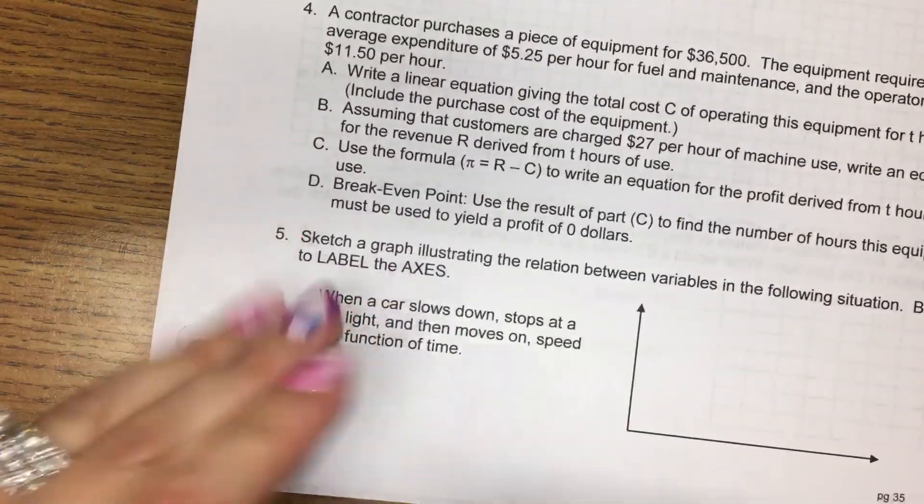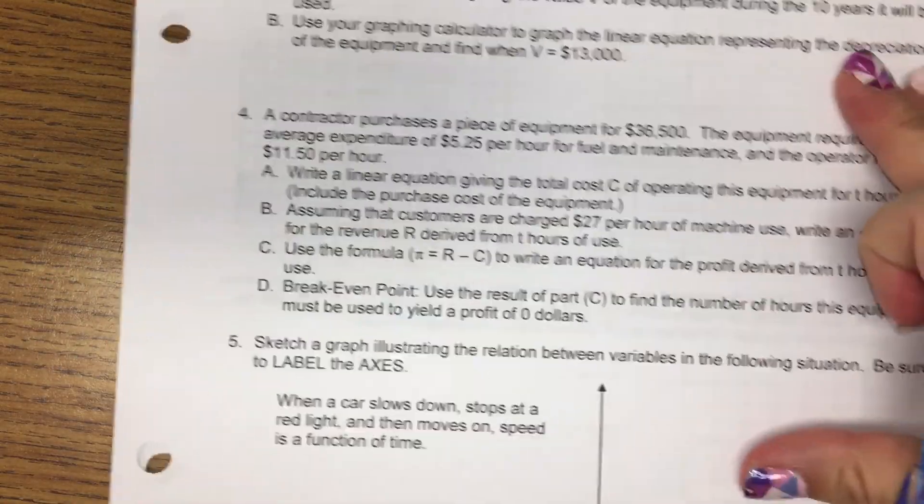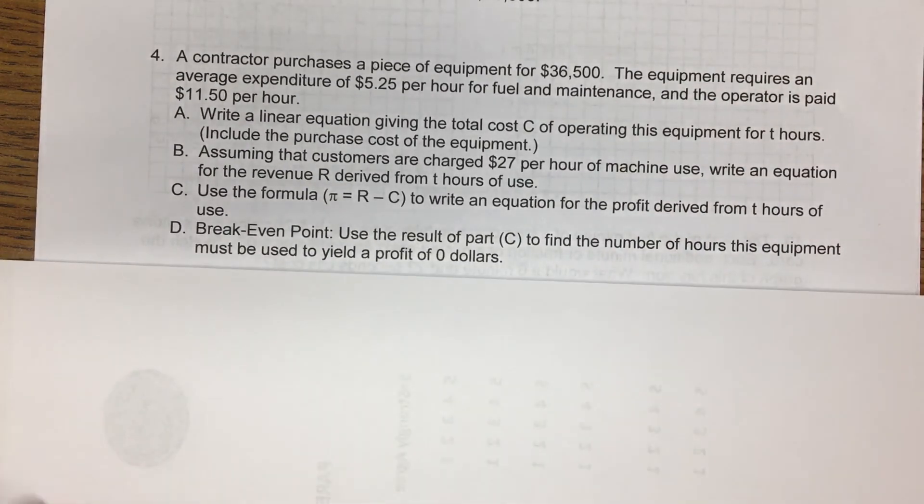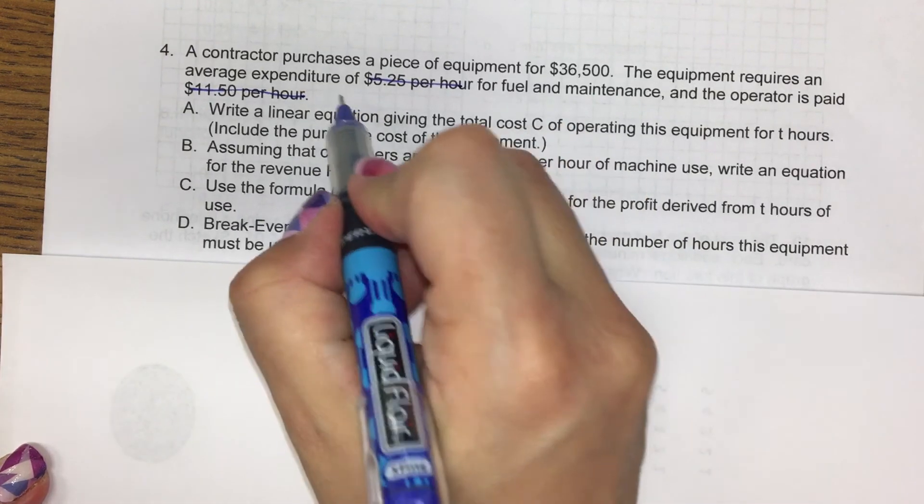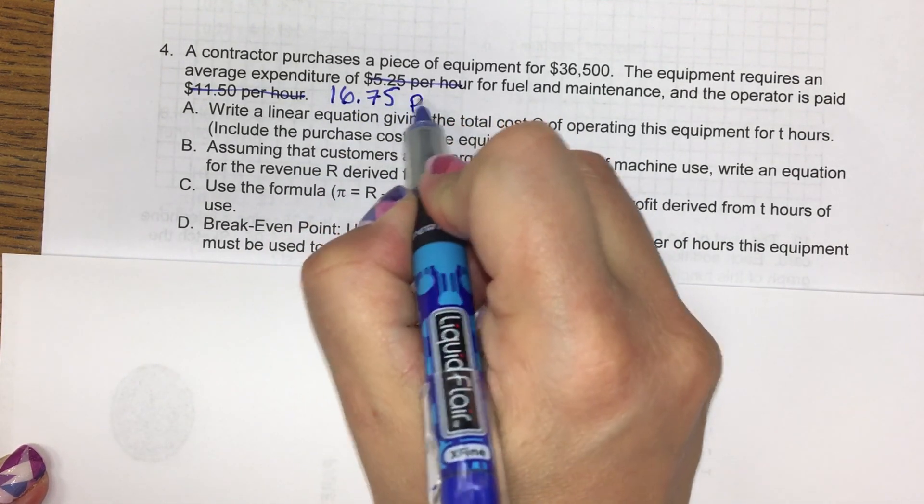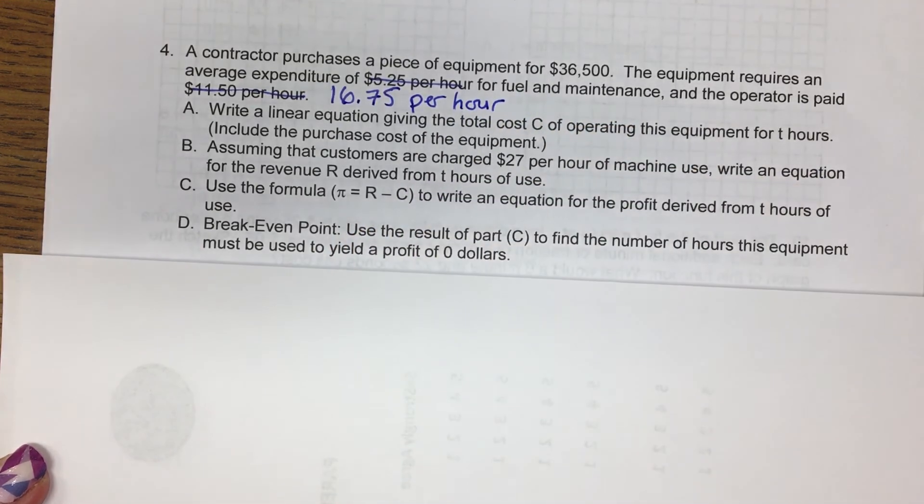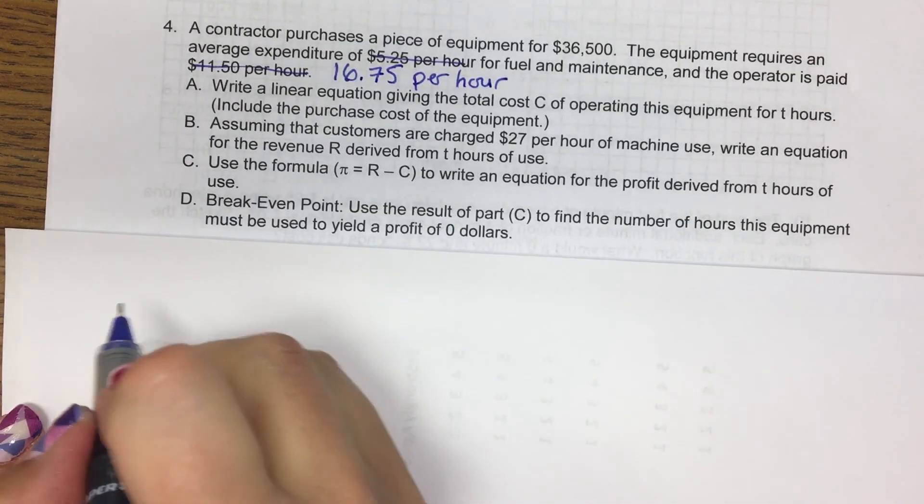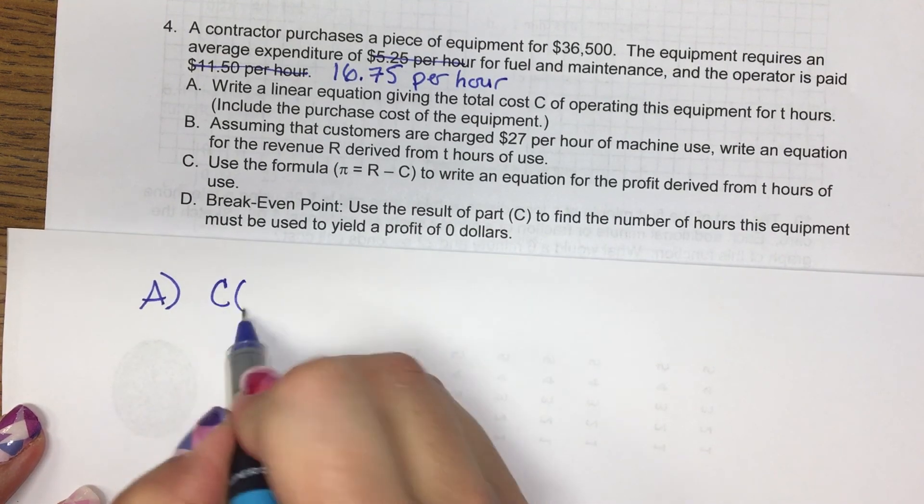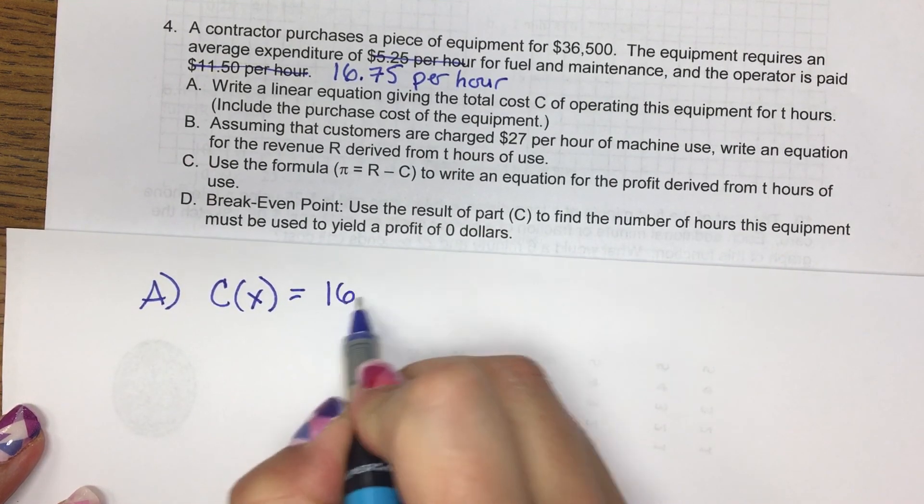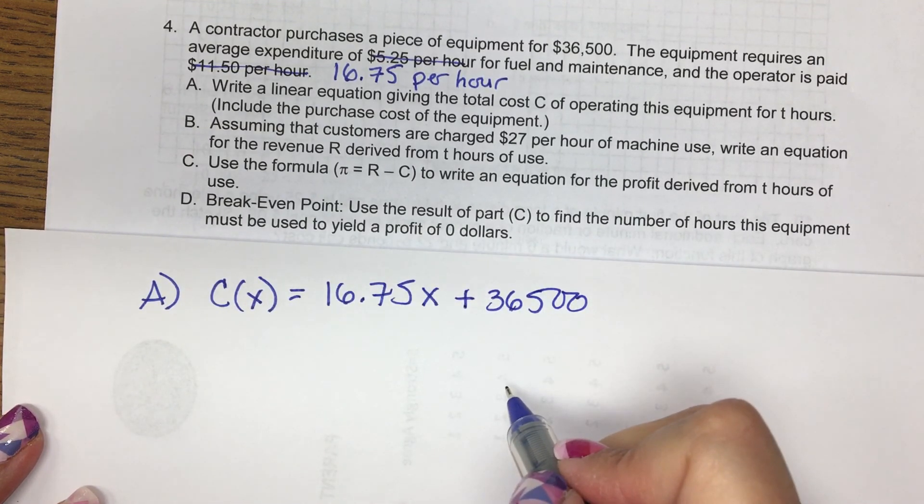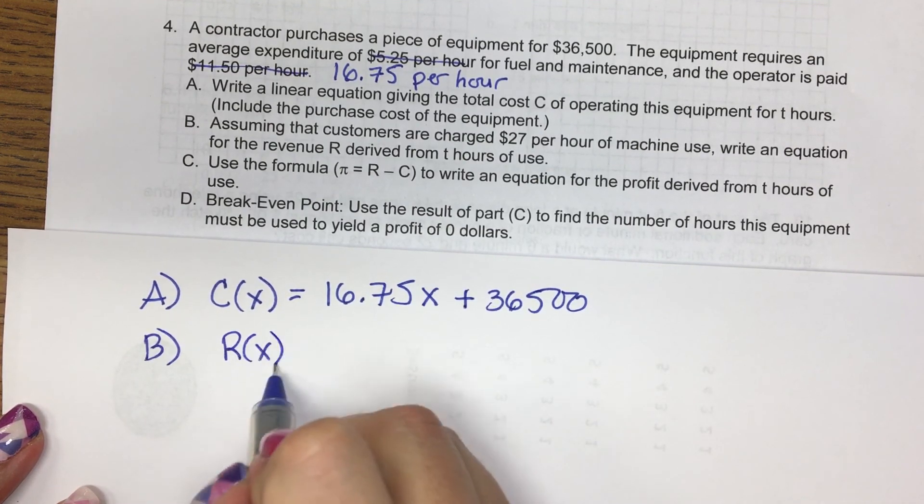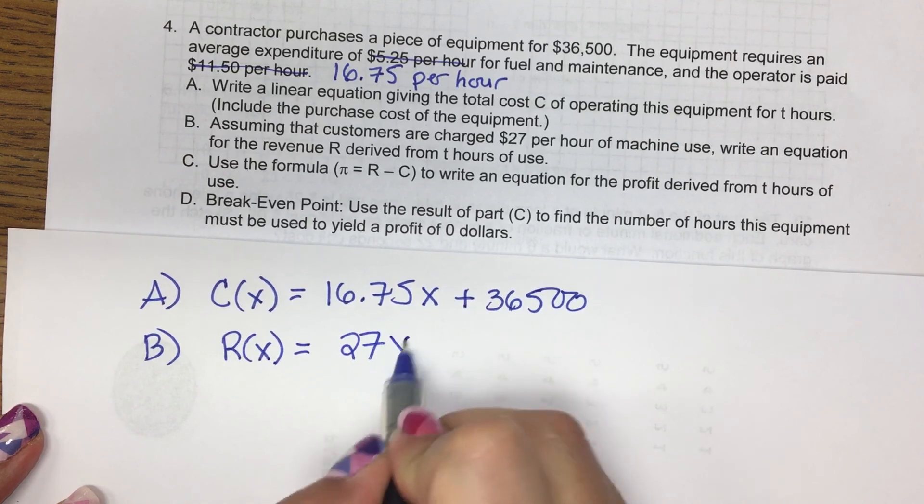Okay, number four is kind of a weirdly worded question. On the test, I'm not going to give you these separate variable costs. I would combine them to say $16.75 per hour. And that will help with part A. Okay, so for A, writing the cost function is variable cost plus fixed costs. Part B is the revenue function. We're going to earn $27 per hour.